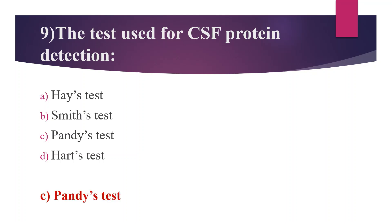Ninth Question: Pandy's test is used for detecting CSF protein. Hay's test is used for detection of bile salts in urine. Hart's test is used for detection of ketone bodies — specifically beta-hydroxybutyrate — in urine. Hay's test is the specific test used for detection of bile salts.